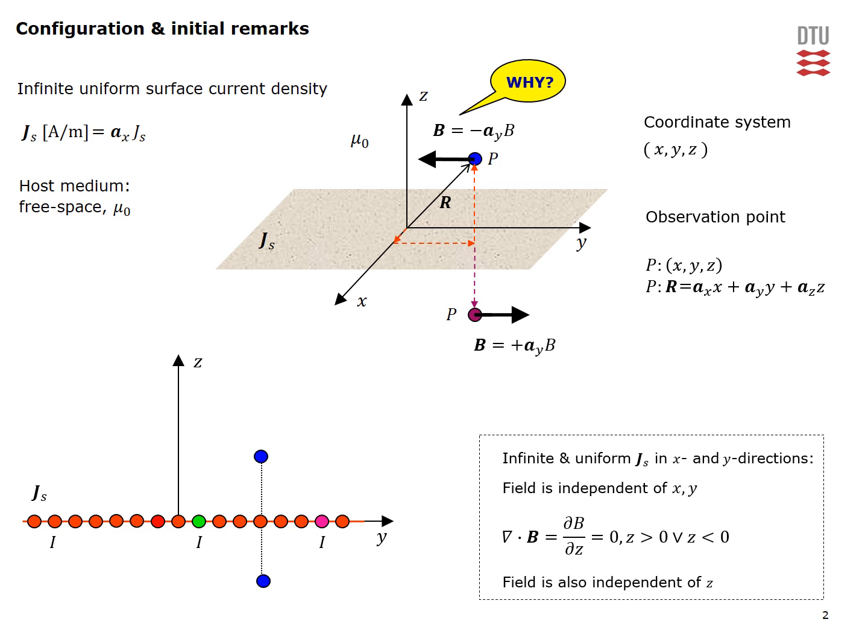In particular focus the attention on this line current that you can see here and also the other one that you can see there and let's look at the fields at these two observation points which are symmetrically located with respect to these two specific line currents. Obviously the field due to this line current and the green one will point in this direction it has only a phi component and down here it will point in that direction.